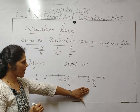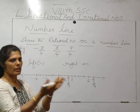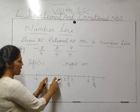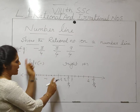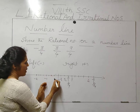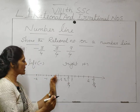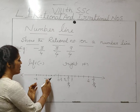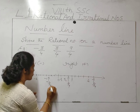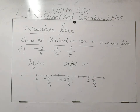Now we go to the minus value — the left side is always negative value. On the negative side, the denominator is also 4 below. So leaving 0, count 1, 2, 3, 4 on this side too. On this side we have minus 1 by 4, minus 2 by 4, minus 3 by 4. Here comes minus 3 upon 4 — this is your rational number on a number line.